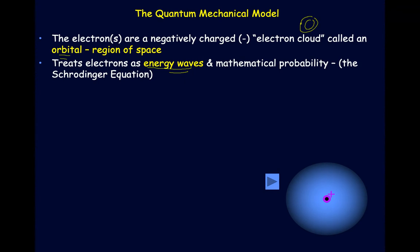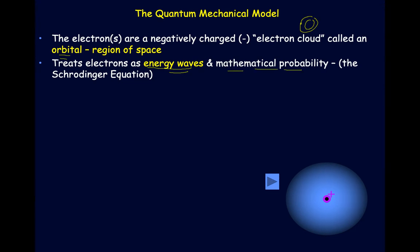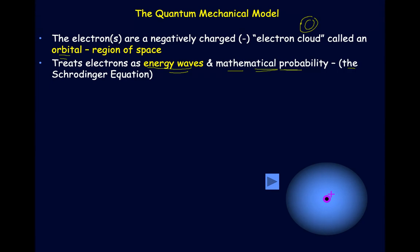Electrons can act as particles, but they also follow wave properties. This mathematical probability — the probability that the electrons are going to be in this area — comes from something called the Schrödinger equation. We won't be solving this equation, but think of it as almost like a 90% probability the electrons will be in that area — around this orbital around the nucleus where they most likely occur.